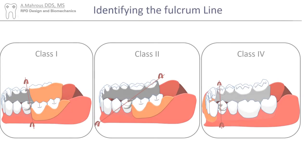As mentioned previously, fulcrum lines exist in cases with distal extensions like Kennedy Class 1 and 2 RPDs, but could also occur in cases with long anterior edentulous spans like a long Kennedy Class 4 RPD.